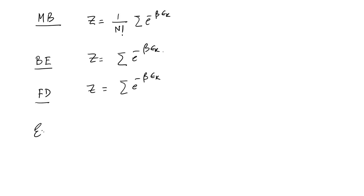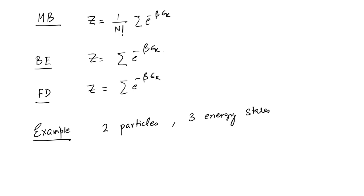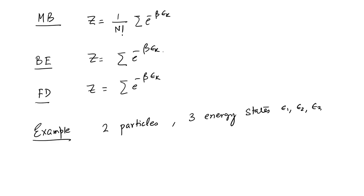Let us take a simple example: two particles and three energy states, which can be labeled ε₁, ε₂, and ε₃. Although the particles are identical and indistinguishable, we will label them A and B so that we can handle the Maxwell-Boltzmann case. The question is how to distribute these two particles among the three available energy states.